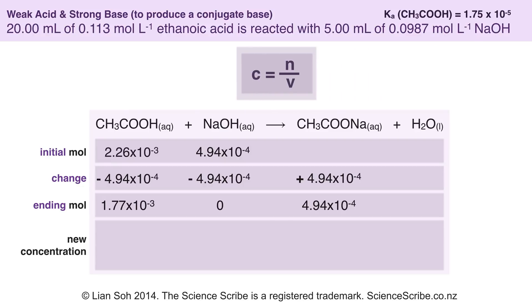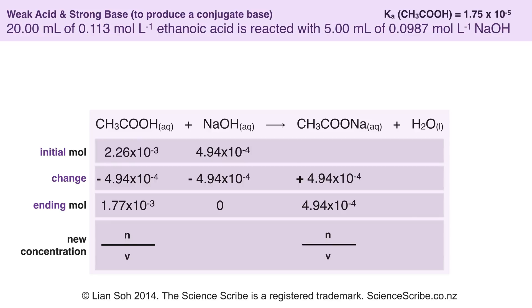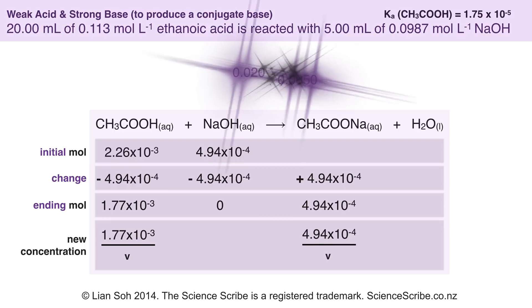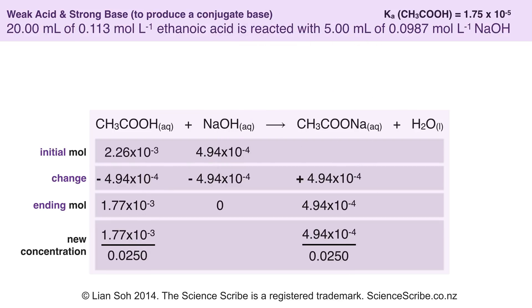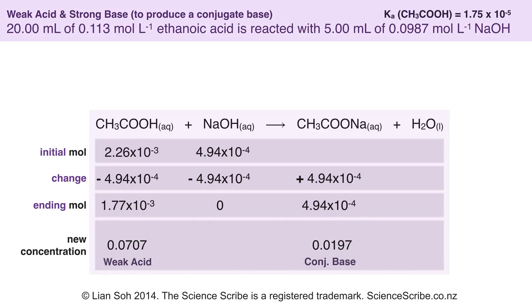To find concentration I take the amount in moles divided by the volume. My volume is 20 mL plus 5 mL, giving 25 mL total — remembering to convert to litres. After calculating, my ethanoic acid concentration is 0.0707 moles per litre and my ethanoate ion concentration is 0.0197 moles per litre.